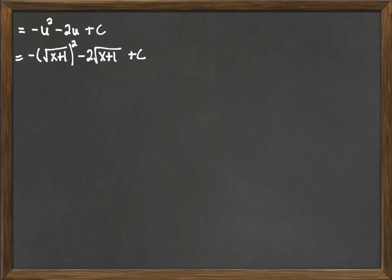And now I can simplify a little bit, square that, distribute the negative. And give me negative x minus 1. And then minus 2 square roots of that stuff, plus c.